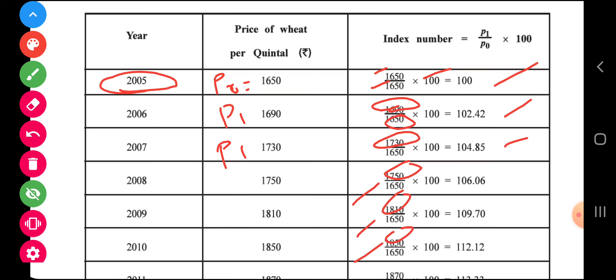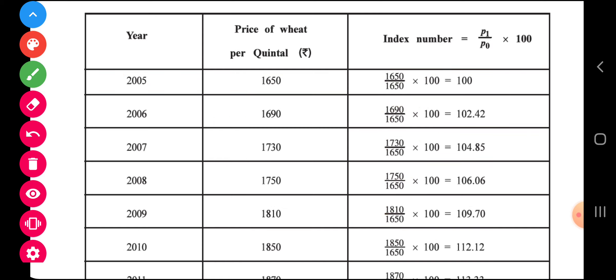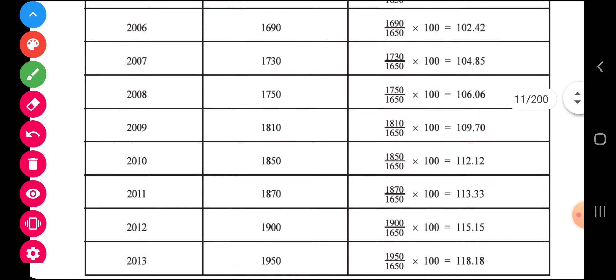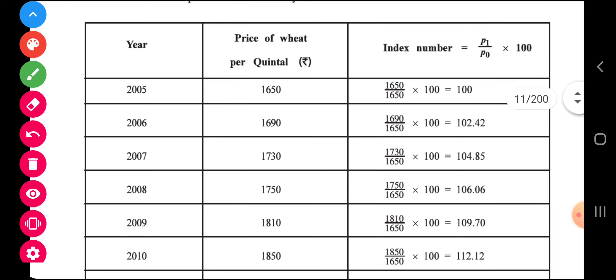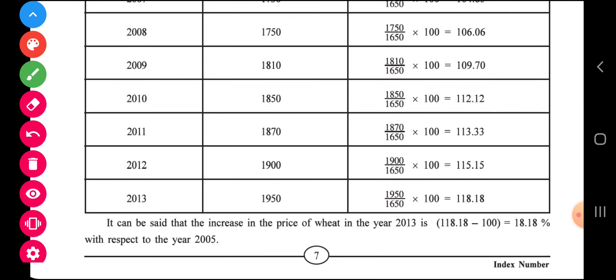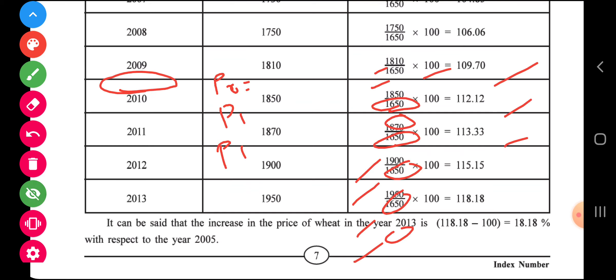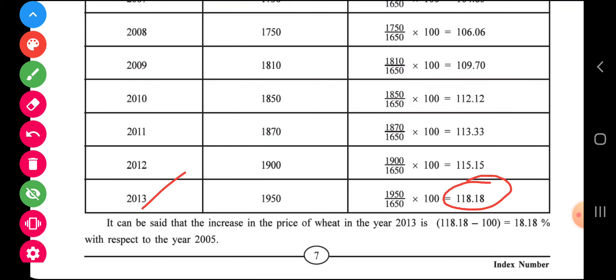Now, between 2005 and 2013, you can compare prices of 1650 and 1950, and see a difference of 300. But looking at the index number: the index of 2013 is 118.18. Comparing 2005's index of 100 to 118.18, that indicates there is an 18.18 percentage increase in the price of wheat.